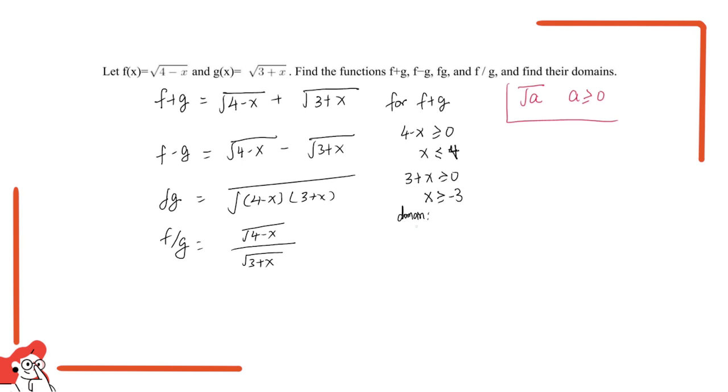From negative 3 to 4. It cannot be greater than 4. It has to be greater than negative 3 and smaller than 4. So x is in the range of negative 3 and 4. This is the range for f plus g.